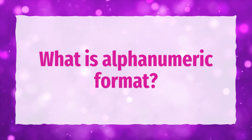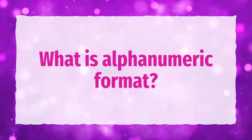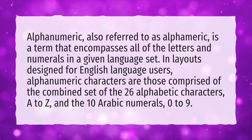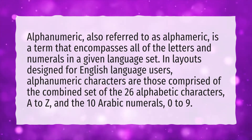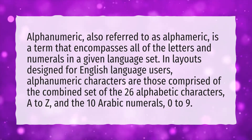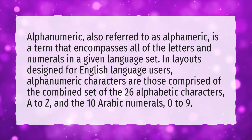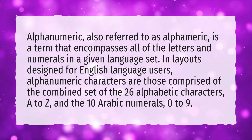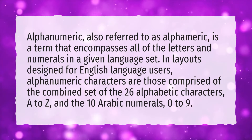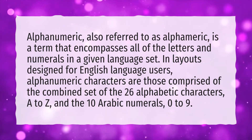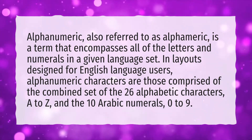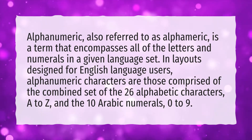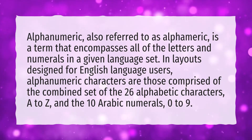What is alphanumeric format? Alphanumeric, also referred to as alphameric, is a term that encompasses all of the letters and numerals in a given language set. In layouts designed for English language users, alphanumeric characters are those comprised of the combined set of the 26 alphabetic characters, A to Z, and the 10 Arabic numerals, 0 to 9.